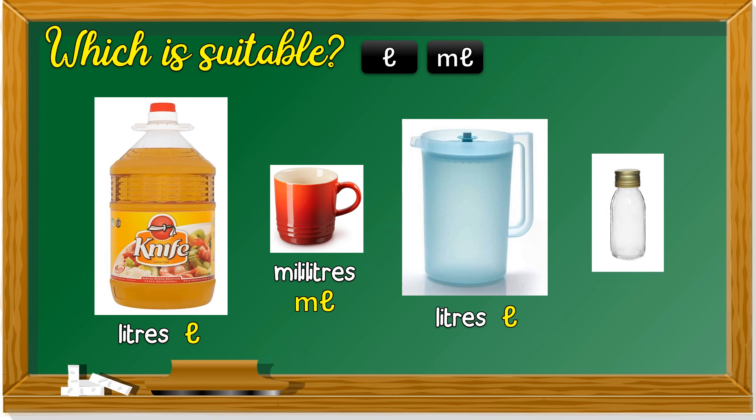Another example. A cute bottle. L or ML? ML. ML. Milliliters. I hope you got it all correct just now.